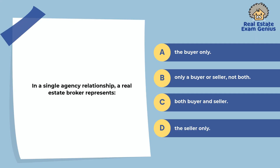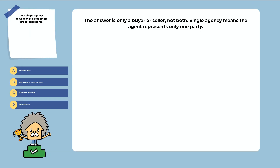In a single agency relationship, a real estate broker represents: the buyer only, only a buyer or seller but not both, both buyer and seller, or the seller only. The answer is only a buyer or seller, not both. Single agency means the agent represents only one party.